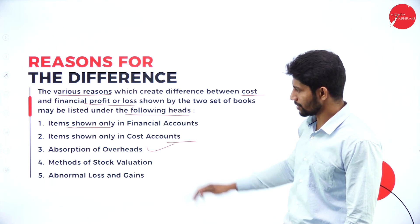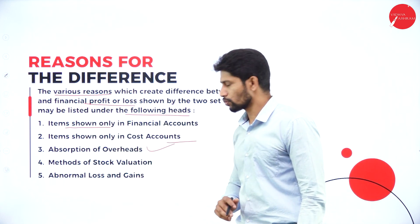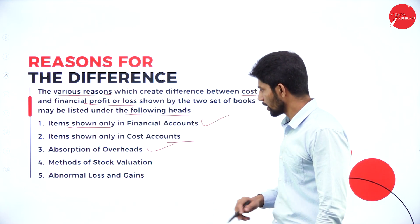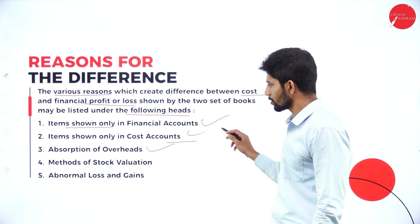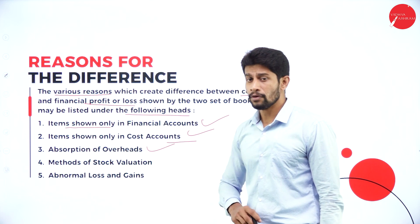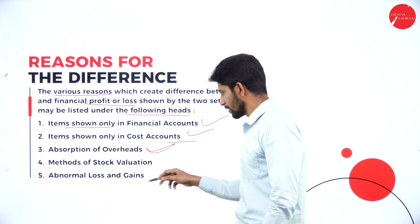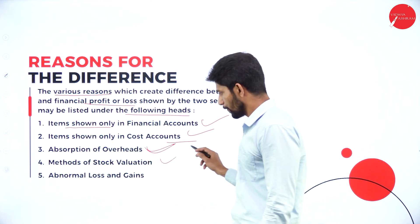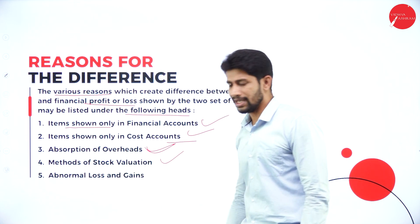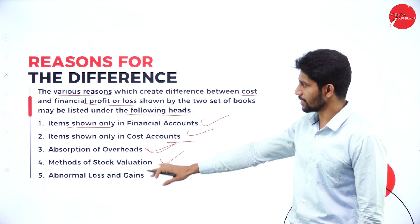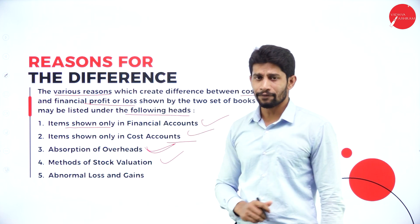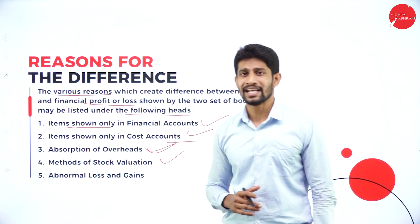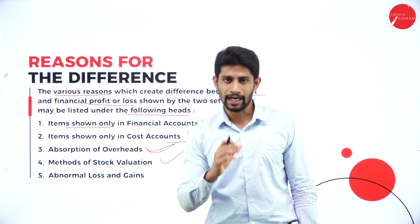So these are the reasons why the financial book as well as the cost book show a difference in profit or loss. The first is items shown only in the financial account; second, items shown only in the cost account; third, absorption of overhead; fourth, methods of stock valuation; and fifth, abnormal losses and gains. These five reasons explain why there is a difference in profit or loss between cost and financial accounts.